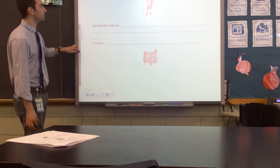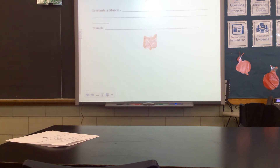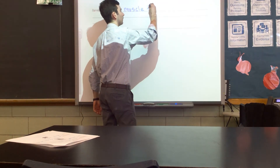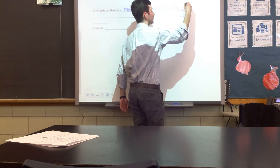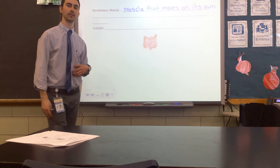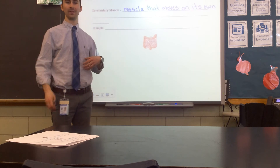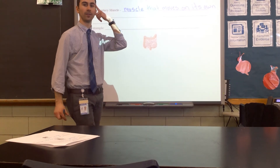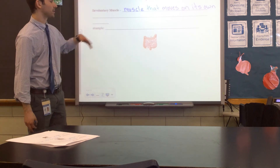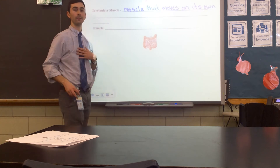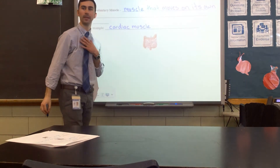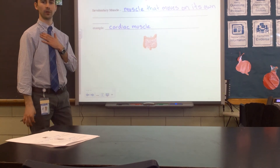The next type of muscle is an involuntary muscle — one that moves on its own. For instance, you've probably been breathing this whole time without thinking about it. Your diaphragm is an involuntary muscle that helps you breathe, though it can become voluntary if you consciously think about breathing. Muscles we cannot control include those around our heart — cardiac muscle — which beats whether you think about it or not.